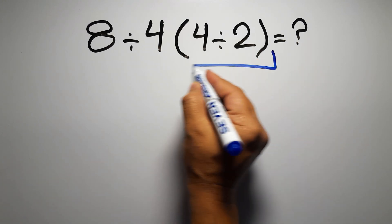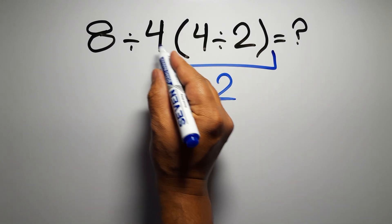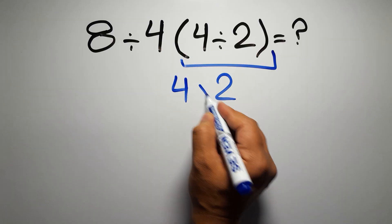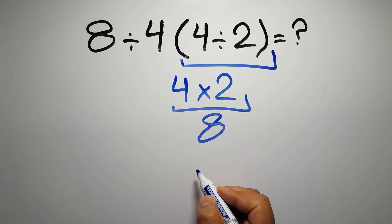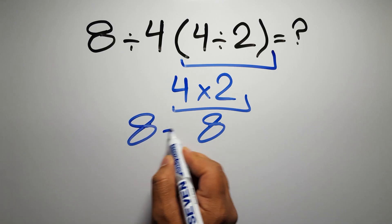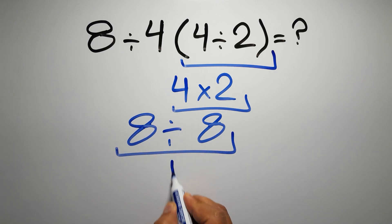4 divided by 2 gives us 2, and 4 times 2 is just 8, so 8 divided by 8 gives us 1. But this answer is not correct,